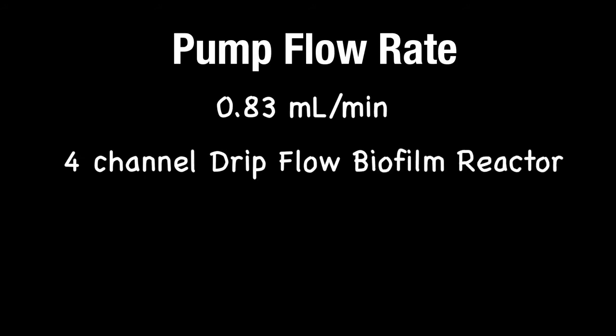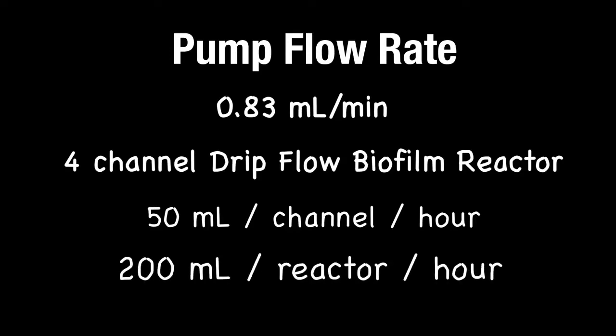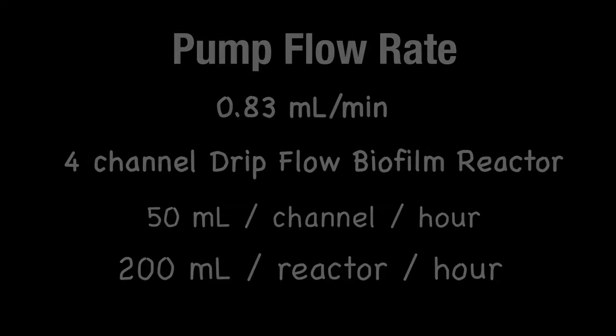The pump flow rate is 0.83 milliliters per minute. For a four-channel drip flow biofilm reactor, this is 50 milliliters per channel per hour, for a total of 200 milliliters per reactor per hour. Follow the pump manufacturer's instructions to set the flow rate. Confirm the flow rate with a timer and adjust accordingly so that it is within plus or minus 0.2 milliliters per minute.